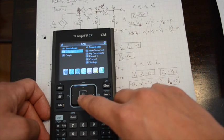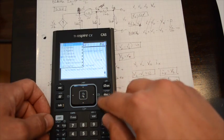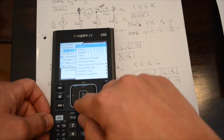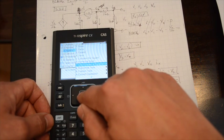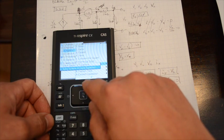So press the on button on your calculator. Go to the calculate screen. Press menu. Down to algebra. Go solve a system of equations. System of linear.